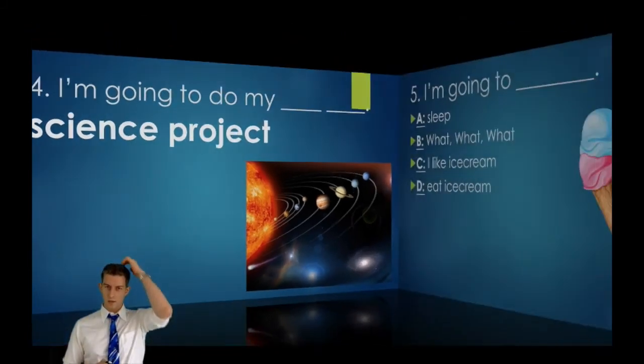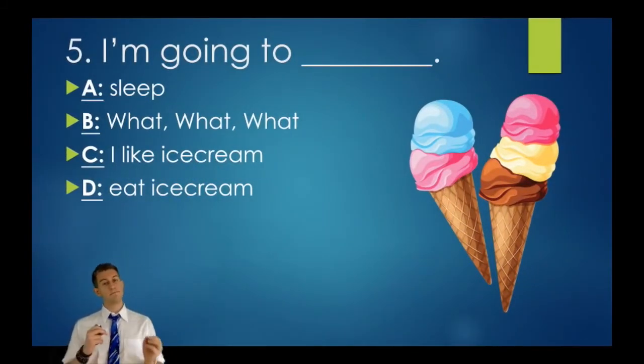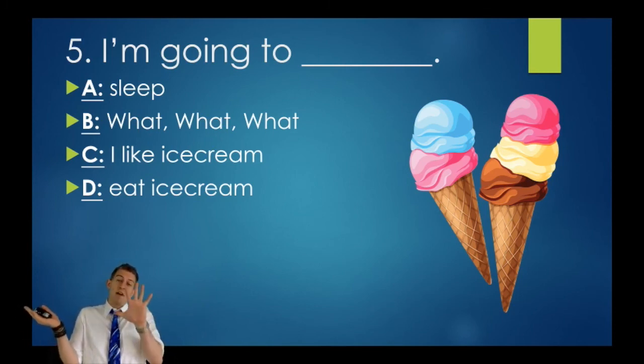Number five. Final question. I'm going to blah blah blah. Number one. A, I'm going to sleep; B, I'm going to what what what; C, I like ice cream; D, I'm going to eat ice cream. A, B, C, D. Five seconds. Go.